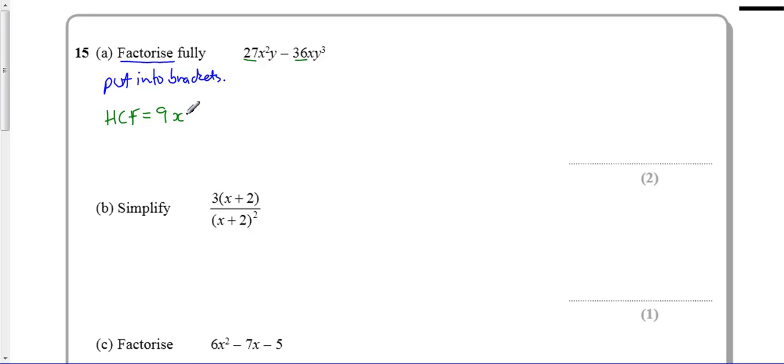That tells me I need 9xy outside the bracket with a subtract in between. I need to work out how to get to 27x²y: three will get me to 27 and x will get me to x squared, and I already have the y here.